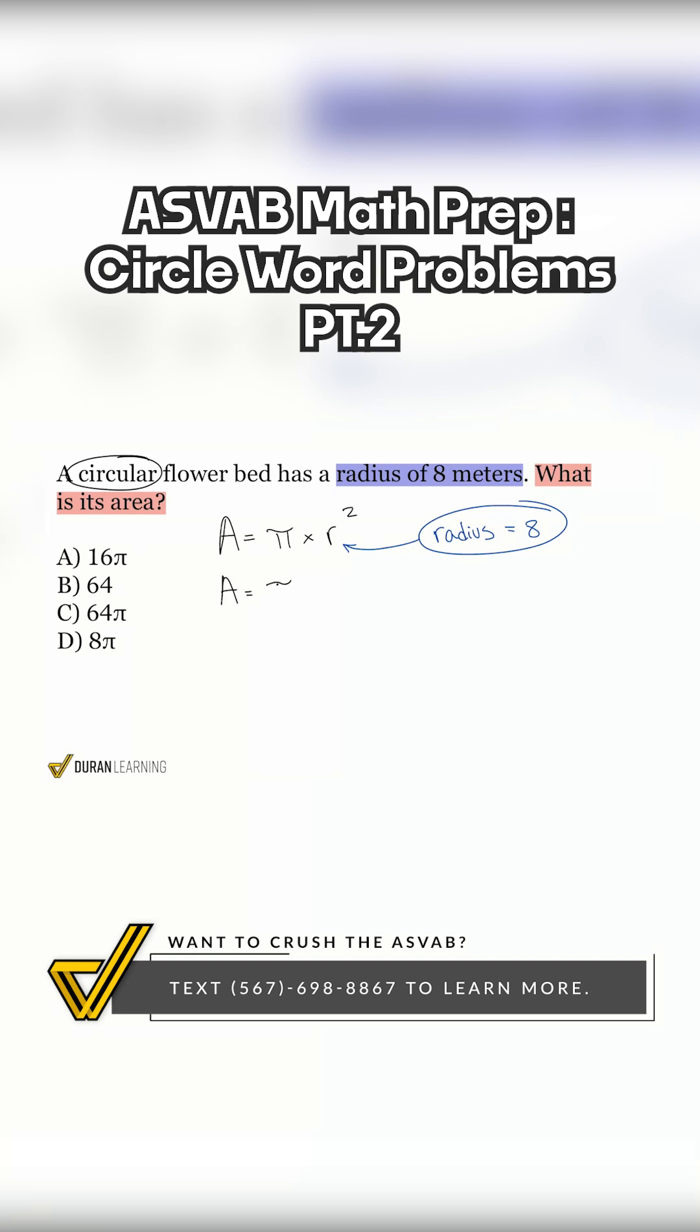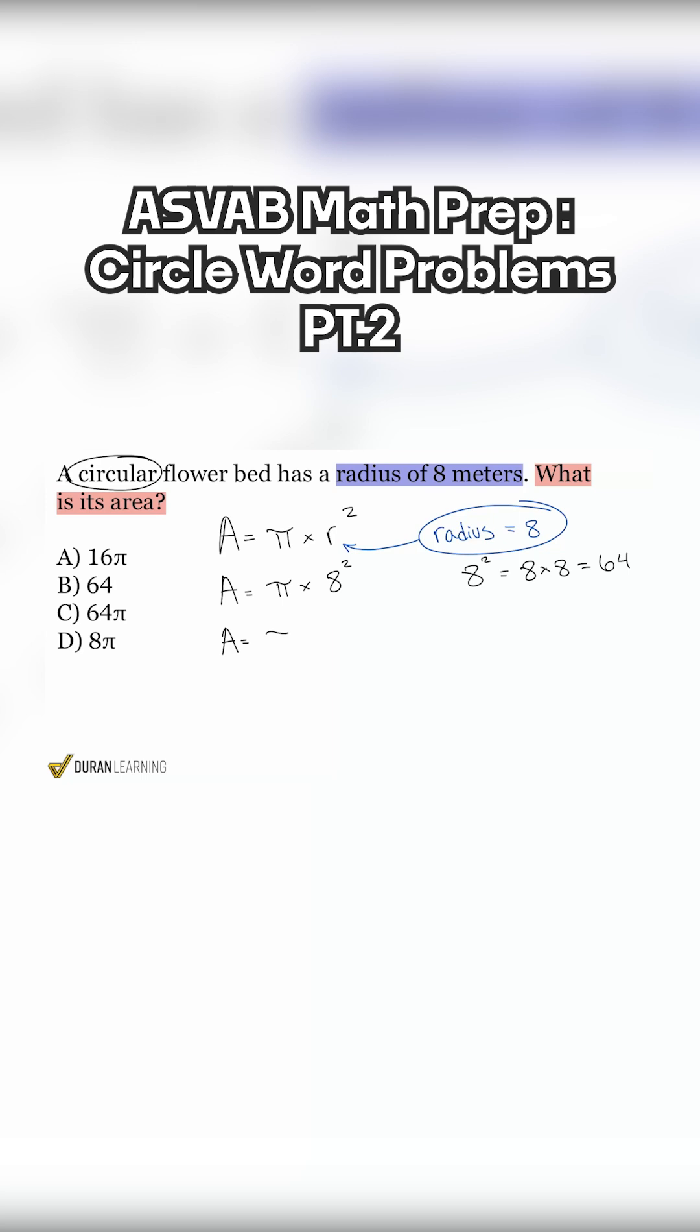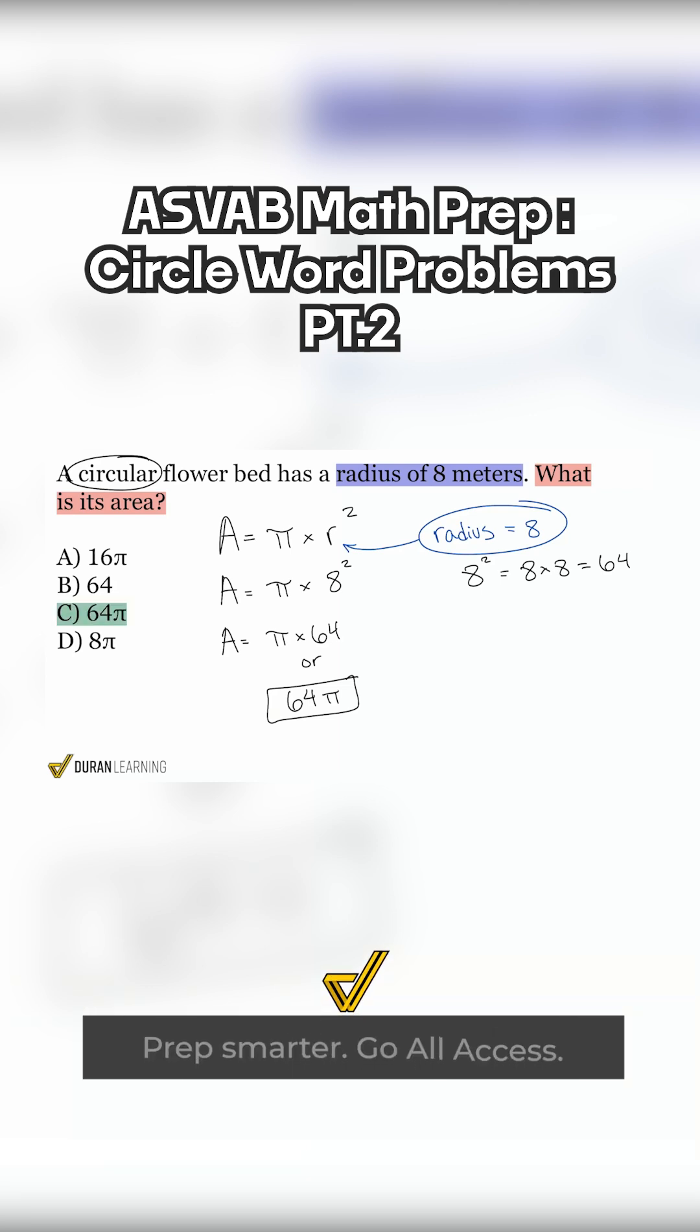A equals pi times eight squared. Eight squared. Remember, that's the same as eight times eight, and that's 64. So because of that, we can replace eight squared with 64. So we have pi times 64, or 64 pi. And there we are. Final answer is going to be 64 pi. Answer choice C.